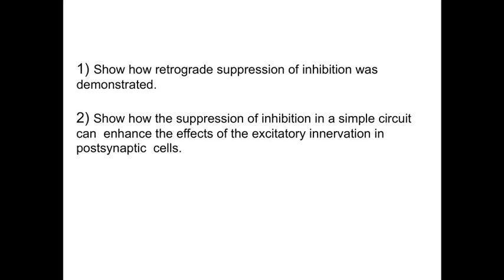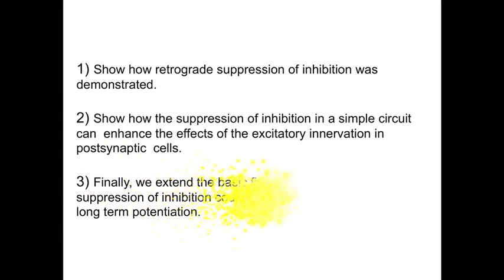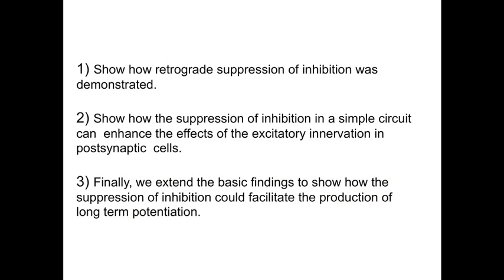Here we will show how retrograde suppression of inhibition was actually demonstrated. We will then show how the suppression of inhibition in a simple circuit can enhance the effects of the excitatory innervation in postsynaptic cells. Finally, we will extend the basic findings to show how the suppression of inhibition could facilitate the production of long-term potentiation.